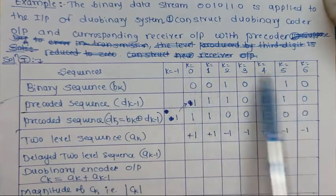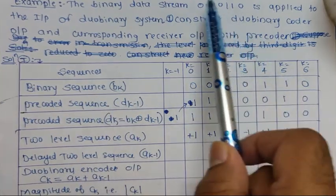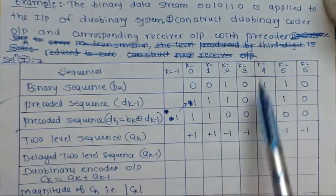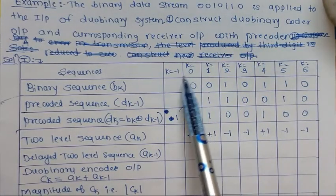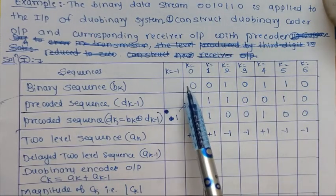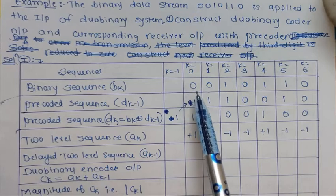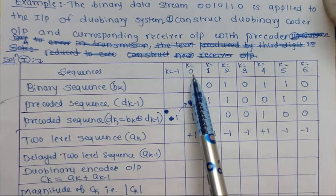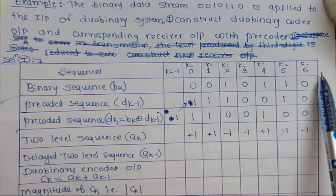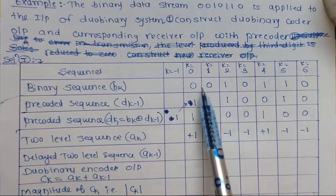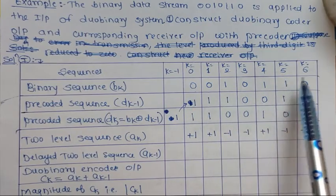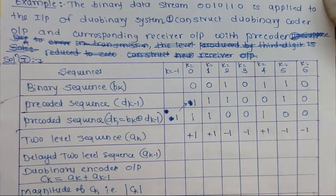First, let me write the sequence. There are a total of seven bits, and there may be some previous bits used in this numerical. So from k = 0, 1, 2, 3, 4, 5, up to 6, the binary sequence bk is: 0, 0, 1, 0, 1, 1, 0.